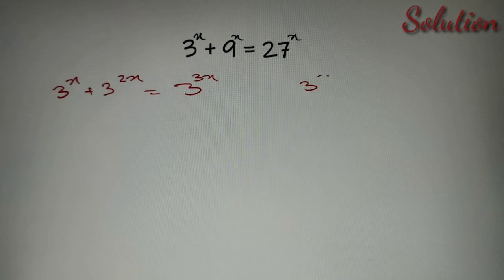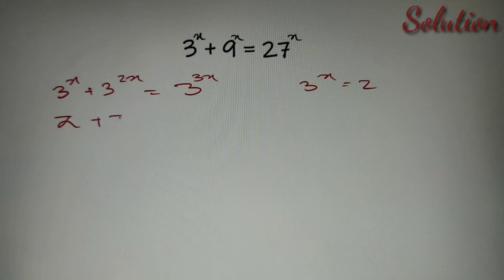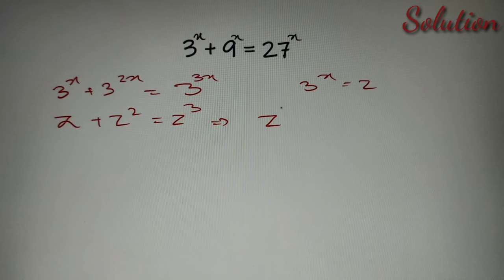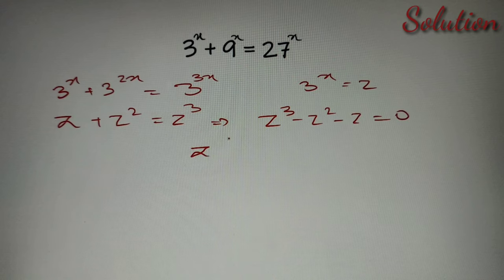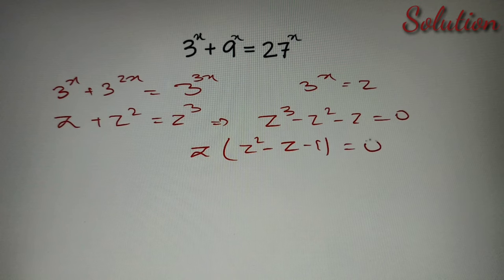Now let's consider 3 raised to the power x as z. If 3 raised to the power x is z, then we'll get the equation z plus z squared is equal to z cubed. Taking all the elements to the right-hand side, we get z cubed minus z squared minus z is equal to zero. Taking z common from all the elements, we get z times (z squared minus z minus one) is equal to zero.